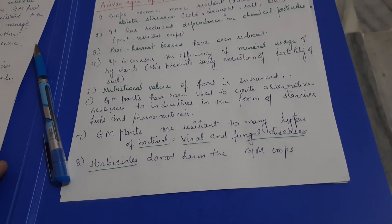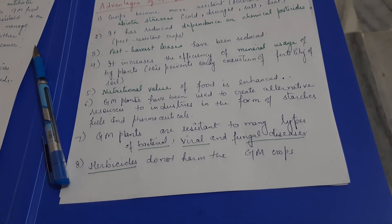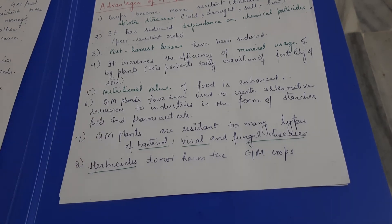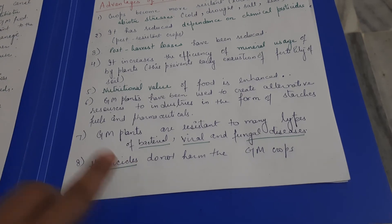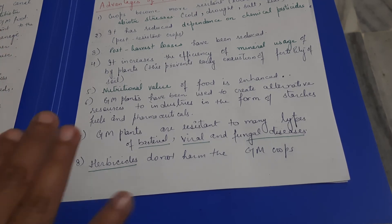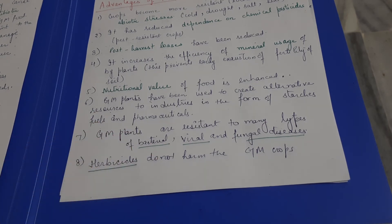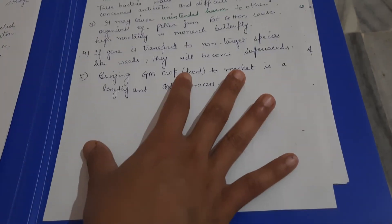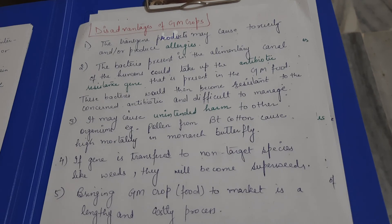GM plants can resist many bacterial, viral, and fungal diseases. Since pesticides are not sprayed, crops are saved and the food chain is not disturbed by chemicals. Overall, GM crops have many benefits compared to normal crops, though we should also be aware of their disadvantages.